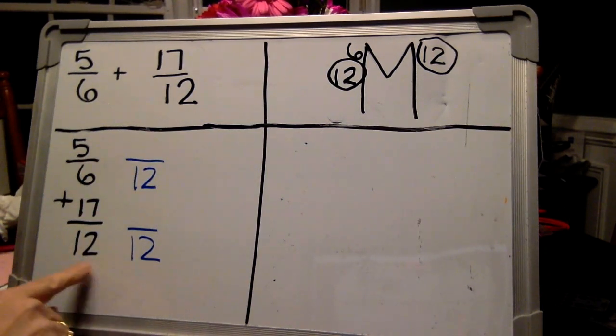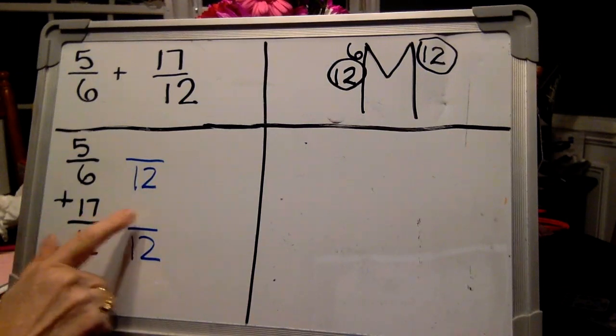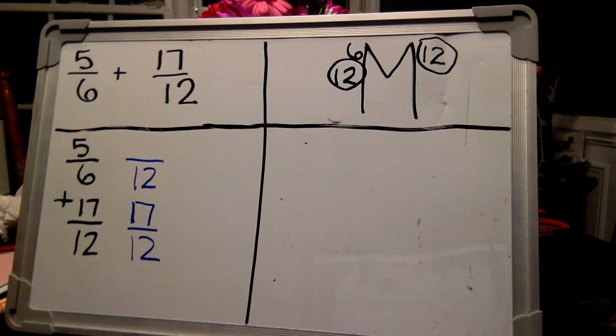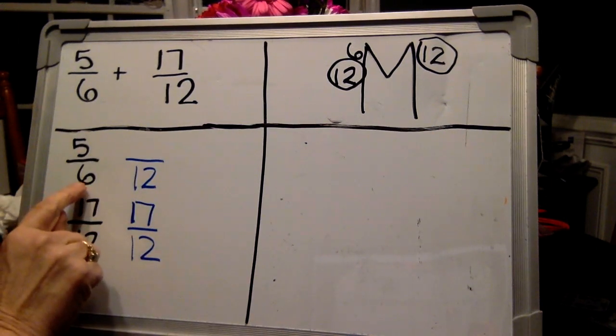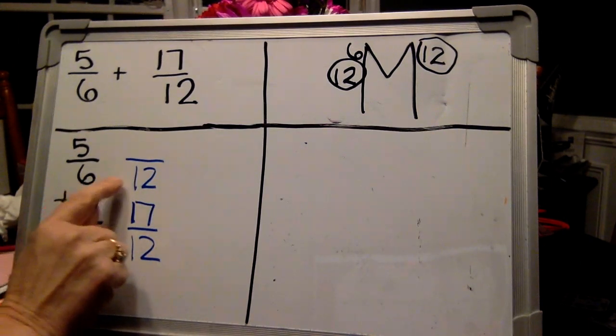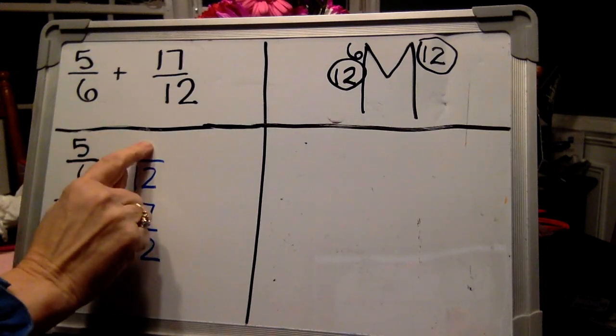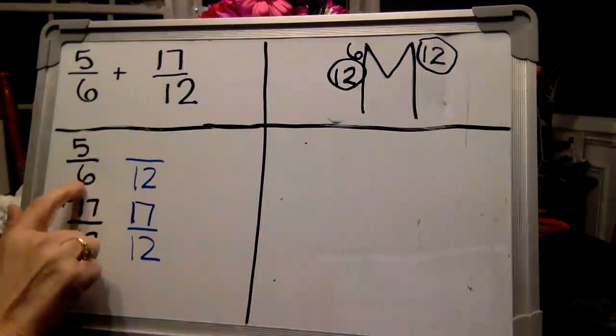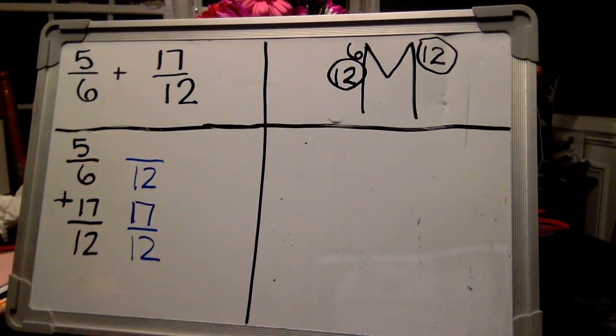Oh, this is nice because this one's already a twelve. So we don't have to do anything fancy for this one. Pause your video and see if you remember how to get this fraction to your new number. I'll give you a hint. You need to use your T-chart and think about the kids in the bunk beds.